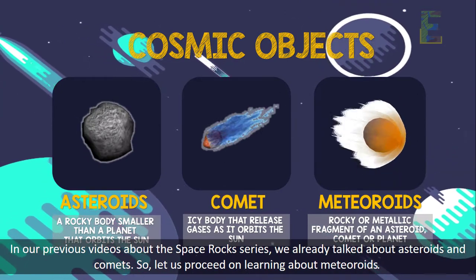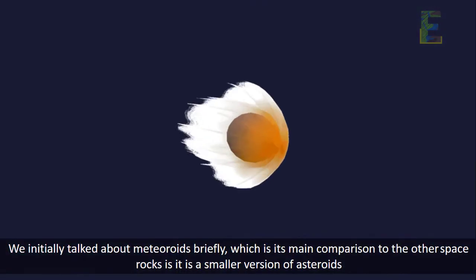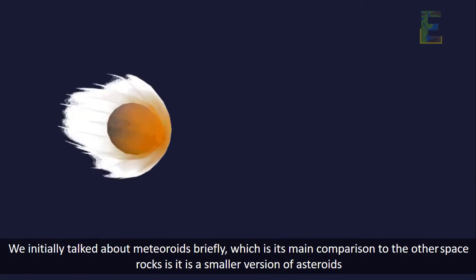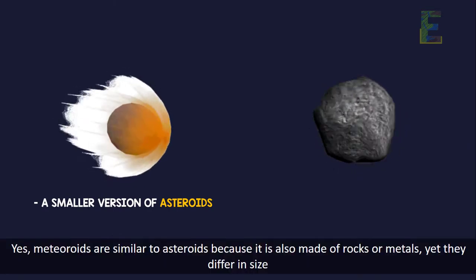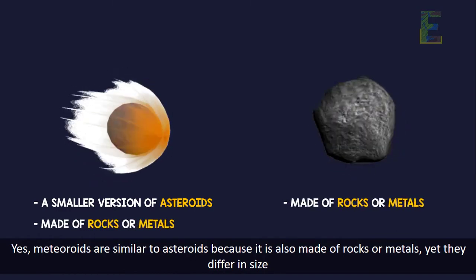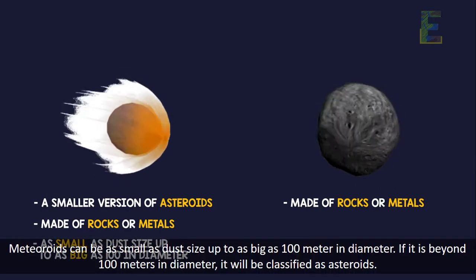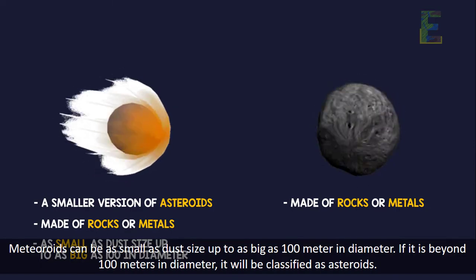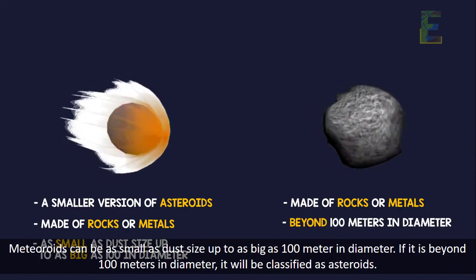So let us proceed on learning about meteoroids. We initially talked about meteoroids briefly, which is its main comparison to the outer space rock. Is it a smaller version of asteroids? Yes, meteoroids are similar to asteroids because they are also made of rocks or metals, yet they differ in size. Meteoroids can be as small as dust size up to as big as 100 meters in diameter. If it is beyond 100 meters in diameter, it will be classified as asteroids.